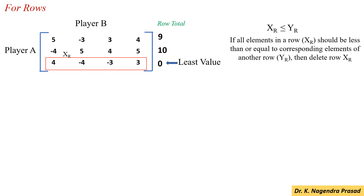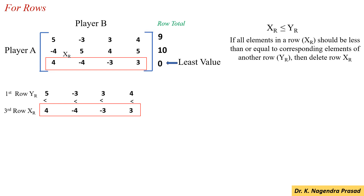First, we have to compare the third row elements with the first row. Here, the third row elements are 4, minus 4, minus 3, and 3. And the first row elements are 5, minus 3, 3, and 4. Then, compare the third row elements with the first row elements.